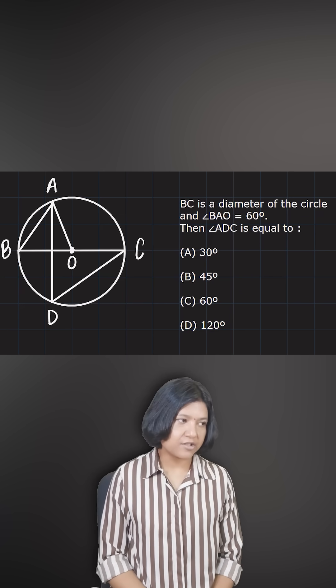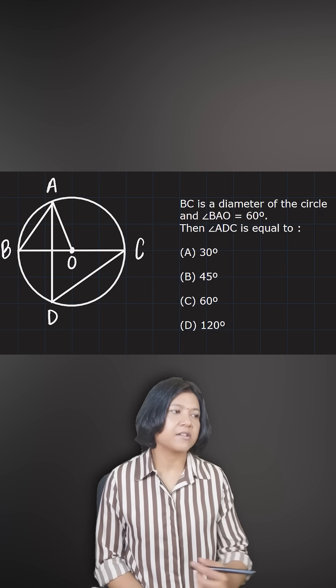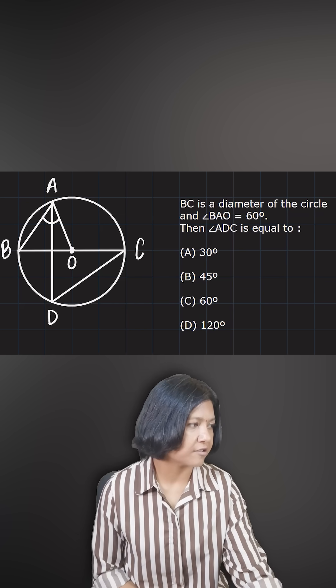You have been given that BC is a diameter and angle BAO has been given to you as 60 degrees. So you just know this angle.